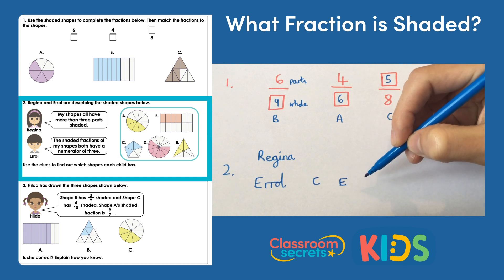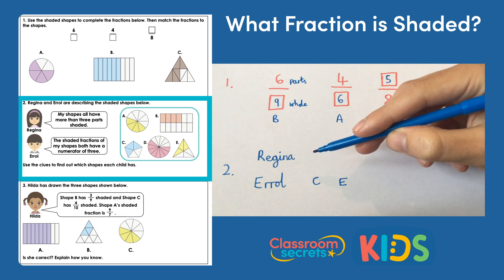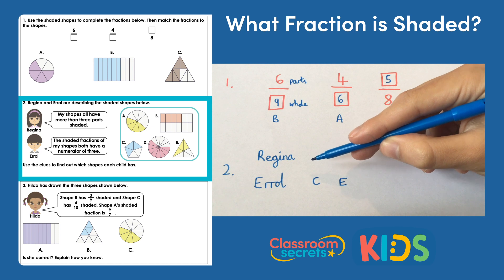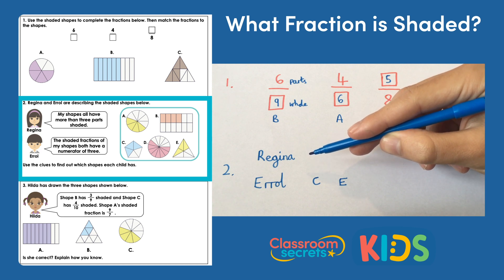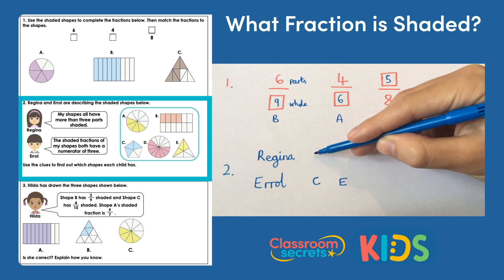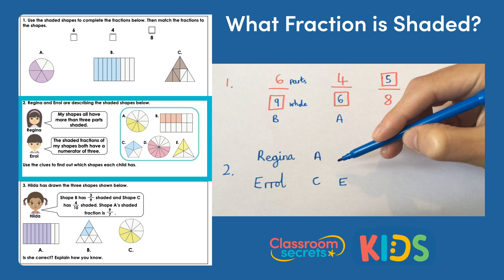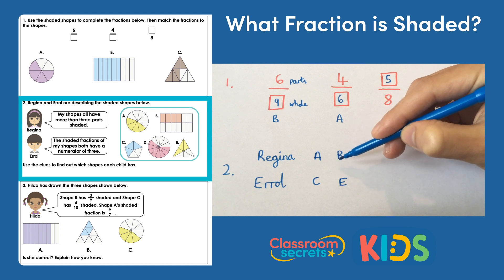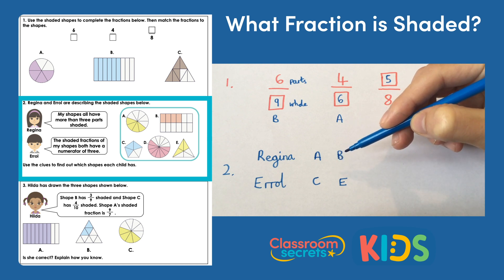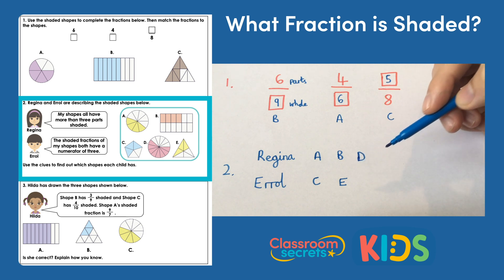Those two shapes have three parts shaded. We have to check for Regina because some shapes might not belong to either child. Regina says her shapes all have more than three parts shaded. Shape a has four parts shaded — so that's definitely Regina's. Shape b also has four parts shaded, and shape d has eight parts shaded, which is also more than three, so that belongs to Regina too.